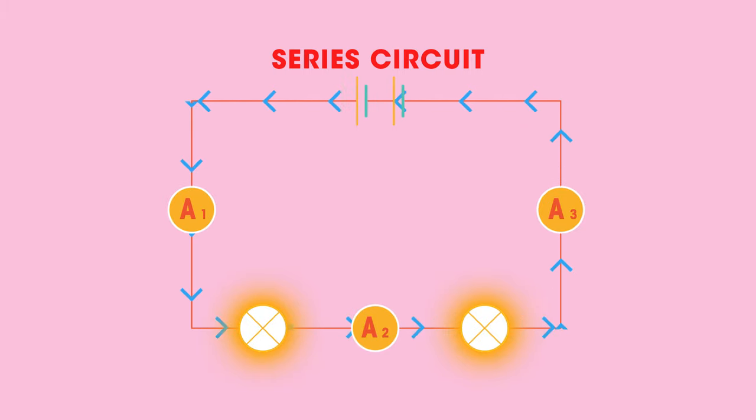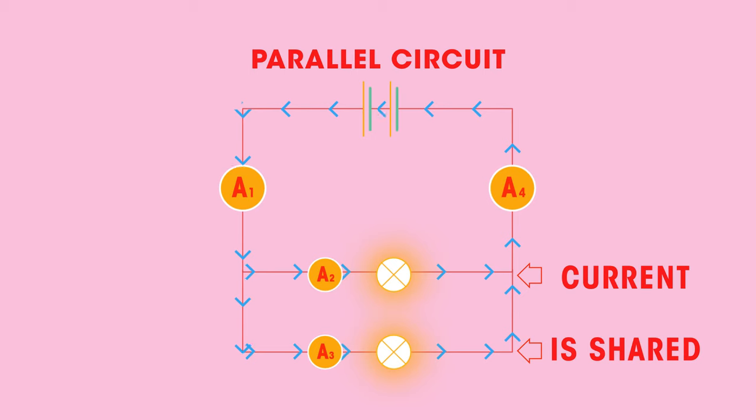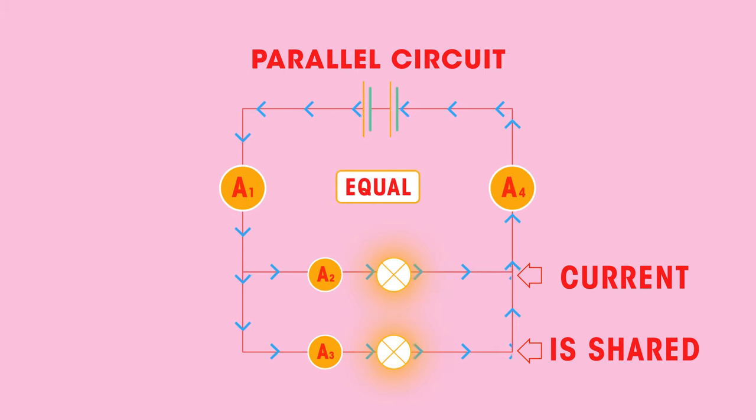This is not true however for parallel circuits. In parallel circuits the current is shared between the different branches of the circuit. So A1 equals A4, but A1 equals A2 plus A3, which equals A4.